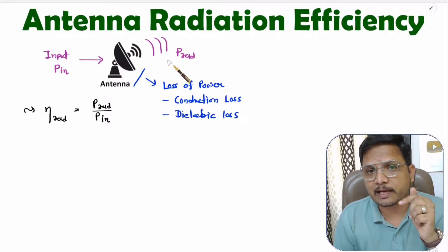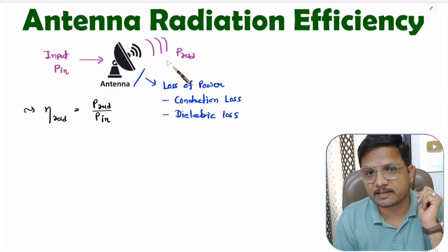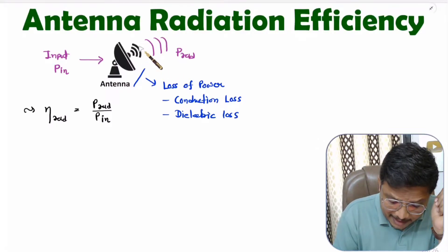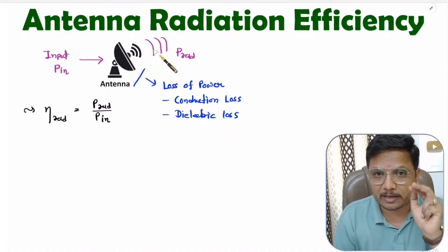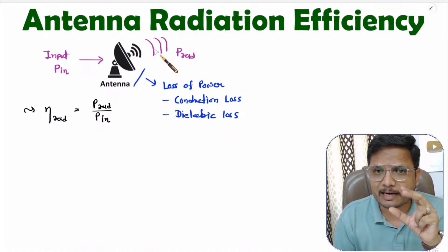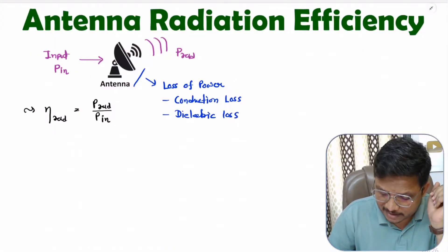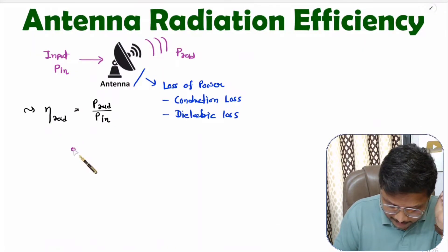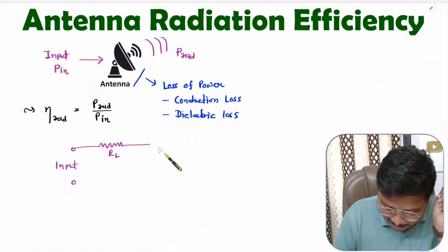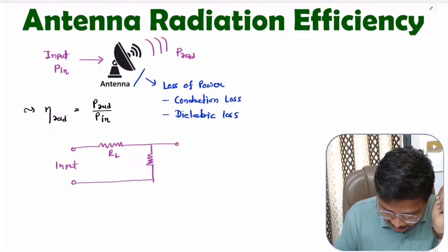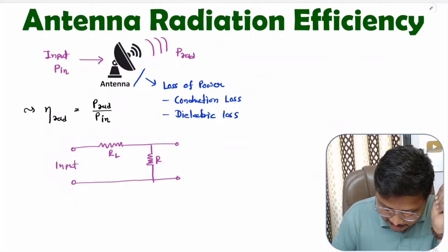Radiation efficiency can also be calculated based on radiation resistance, because the radiation of power is purely happening based on the radiation resistance of the antenna. To understand that, you need to understand the equivalent model of the antenna. If we give an input signal to this antenna, there is a resistance due to lossy components — let us say that is R_L — and radiation is happening because of radiation resistance R_R.